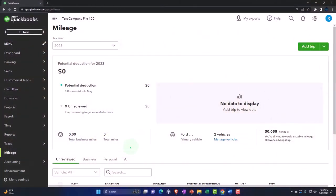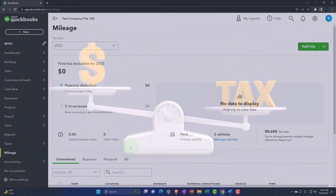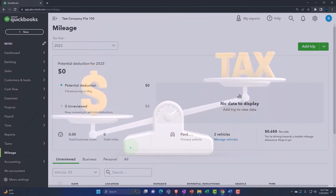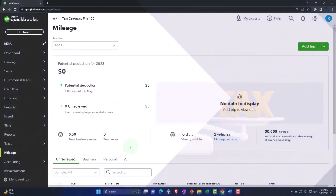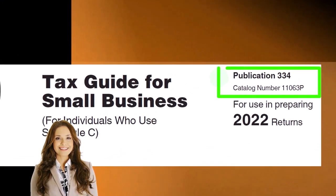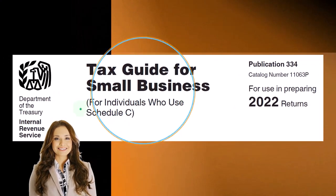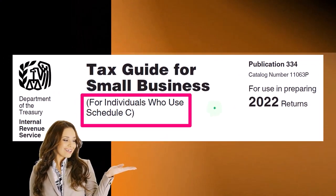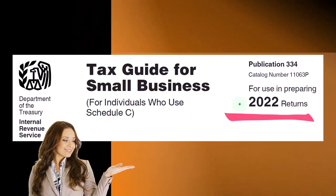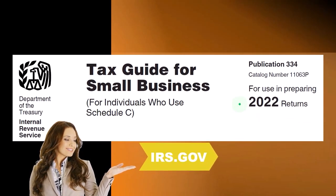So before we understand how we can put this into our bookkeeping system to help us with our taxes, we want to get an idea of the deductibility of auto expenses on the taxes. Most of this information is coming from Publication 334, Tax Guide for Small Businesses, for individuals who use Schedule C, tax year 2022, which you can find on the IRS website at irs.gov.